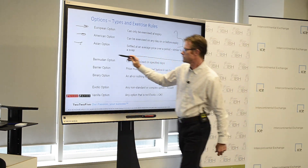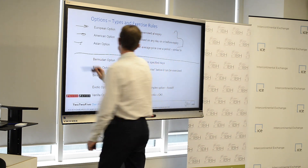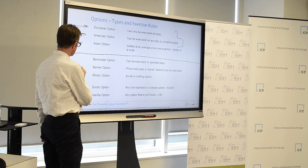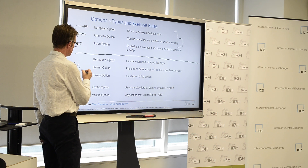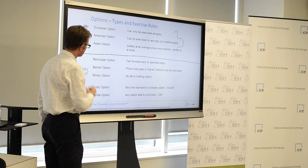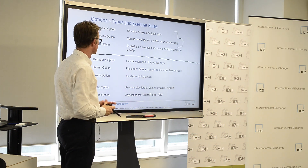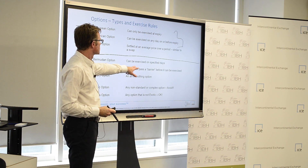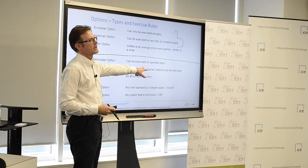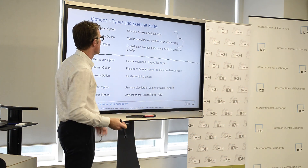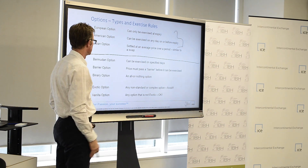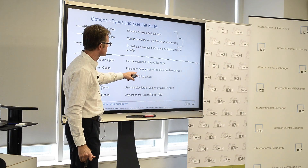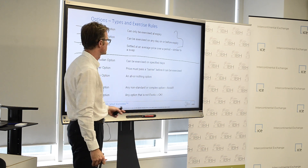The other options are generally dangerous and are created by marketers — usually Goldman Sachs — to try and sell to companies. A Bermudan option can only be exercised on specific days. Why would you need that? A barrier option requires the price to pass a certain barrier before it can be exercised.